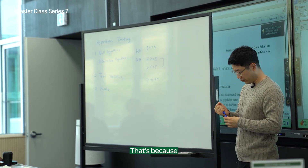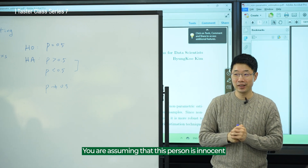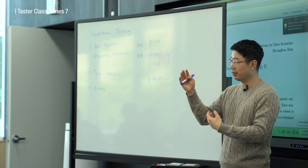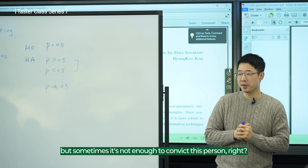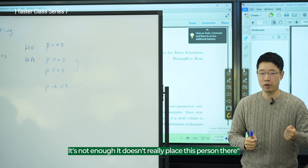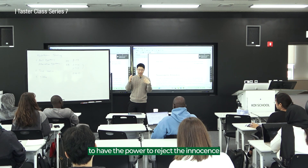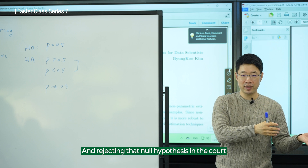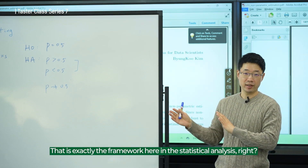Recall the court analogy: you're assuming this person is innocent — that is your null hypothesis, something you want to reject with evidence. Prosecutors usually have some evidence, but sometimes it's not enough to convict. A judge might say it's only circumstantial and doesn't really place this person there. You need to accumulate sufficient evidence to have the power to reject the innocence hypothesis. And rejecting that null hypothesis in court automatically means the person is guilty. That is exactly the framework in statistical analysis.